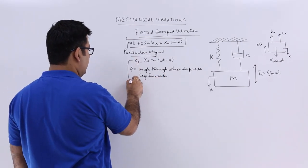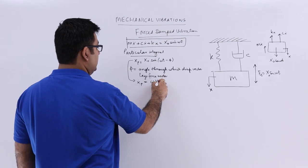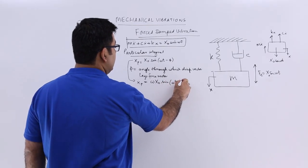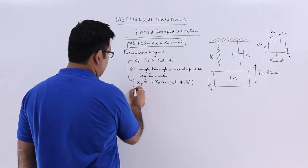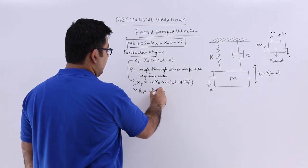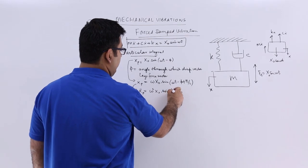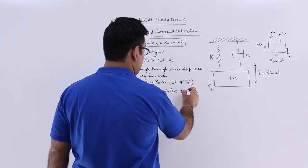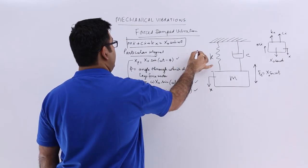If I differentiate xp, I get xp-dot, which gives me omega * x0. I can keep it in sine form by adding 90 degrees, giving sin(omega*t - phi + pi/2). If I differentiate again, I get xp-double-dot, the acceleration term, which gives sin(omega*t - phi + pi/2) with the appropriate coefficient. We will then substitute these expressions into the equation of motion.